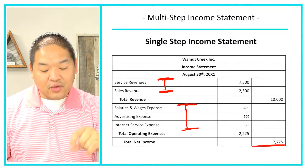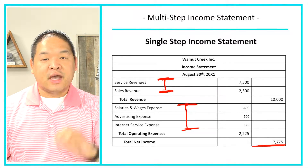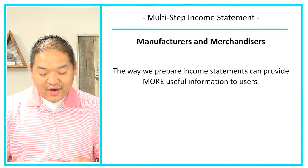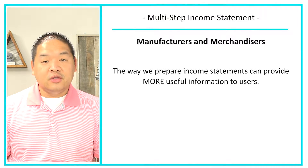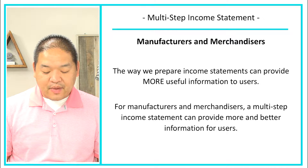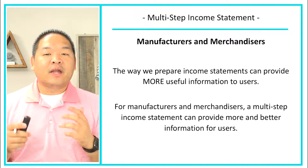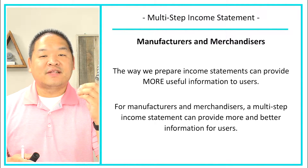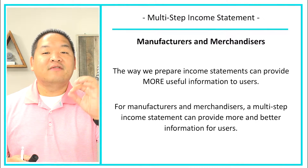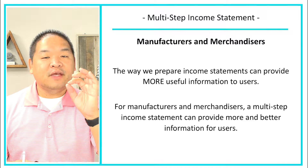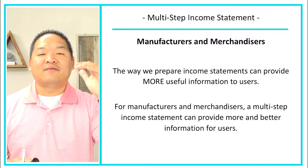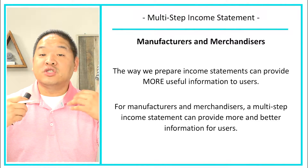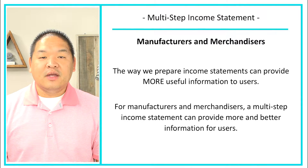In this lesson we're talking about the multiple step income statement, so we're going to change this up. For manufacturers and merchandisers, the way we prepare income statements can provide more useful information to users. A multi-step income statement can provide better information, and a lot of this has to do with efficiency. Sure, we can use a single step for a merchandiser and a manufacturer, but there isn't that efficiency. We want to give the reader gross profit without having them calculate it themselves — because we know everybody would be calculating gross profit. So why not just give it to them? That's what the multiple step income statement does.